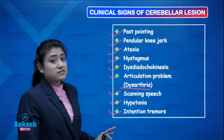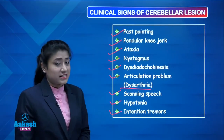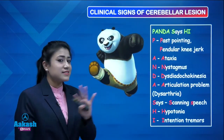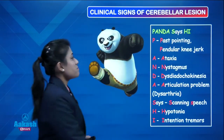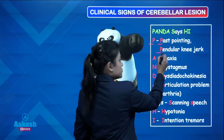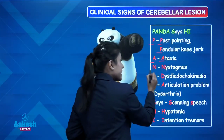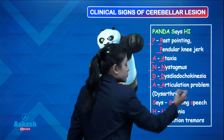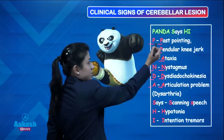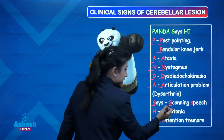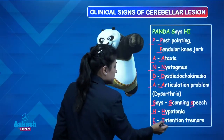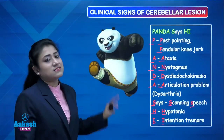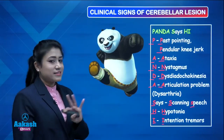I have made a nice mnemonic for you: 'PANDA SAYS HI.' P is for past pointing and pendular knee jerk. A is for ataxia. N is for nystagmus. D is for dysdiadochokinesia. A is for articulation problem, that is dysarthria. Then SAYS HI: S is for scanning speech. H is for hypotonia. I is for intention tremors. This is how you will remember all clinical signs of cerebellar lesion — PANDA SAYS HI.